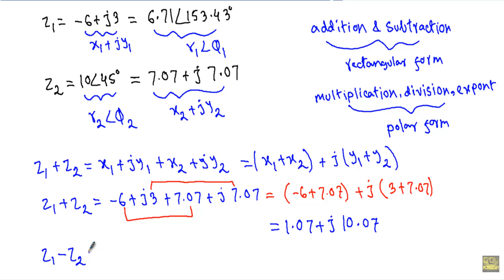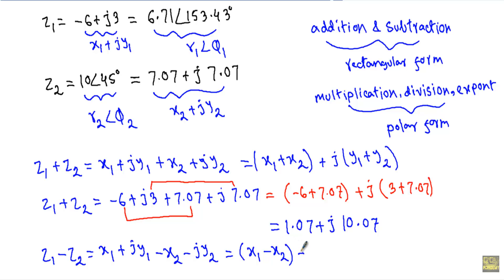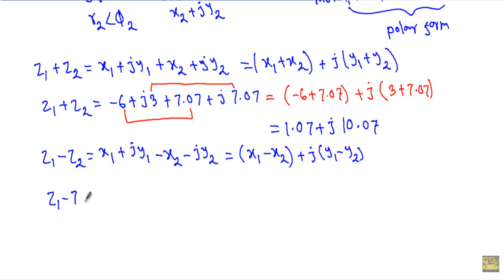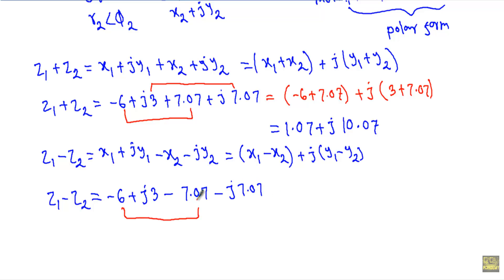While performing subtraction, we use rectangular form: (x1 plus jy1) minus (x2 plus jy2). The real part is subtracted from the real part and the imaginary part from the imaginary part, giving j(y1 minus y2). For Z1 minus Z2, I write it as (minus 6 plus j3) minus (7.07 plus j7.07), working with real parts and imaginary parts separately.